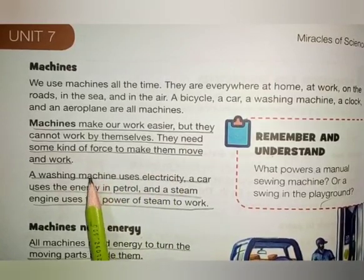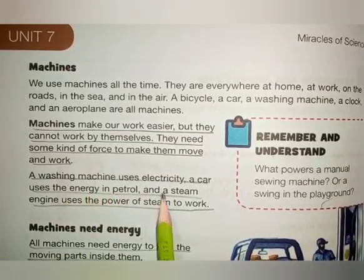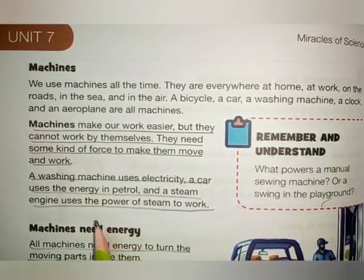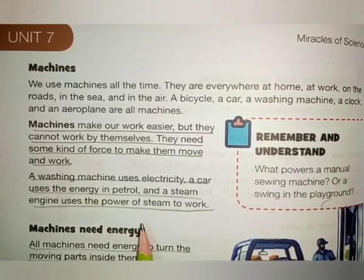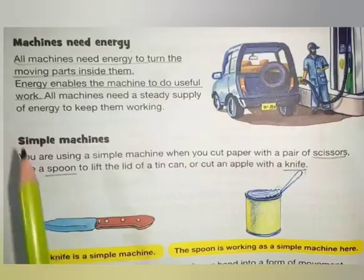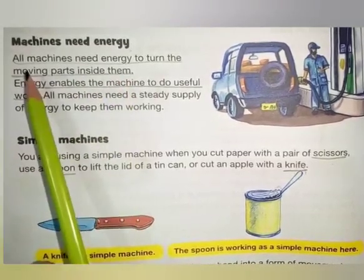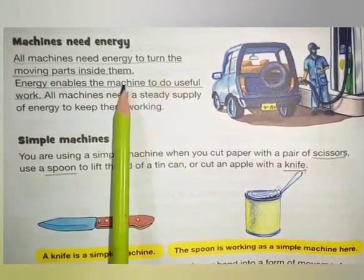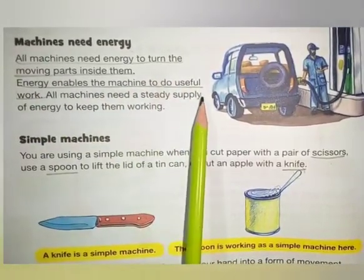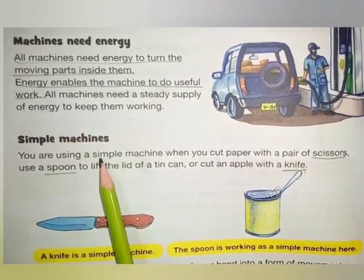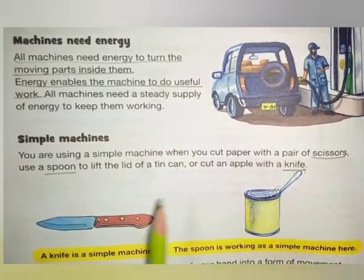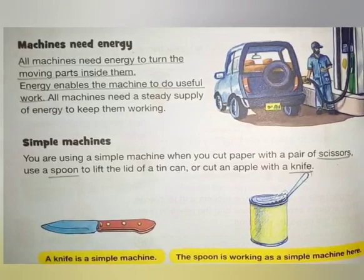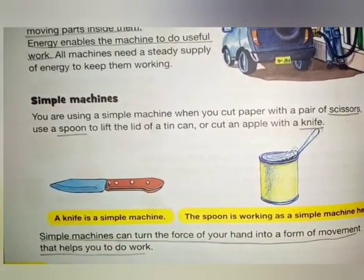For example, a washing machine uses electricity, a car uses the energy in petrol, and a steam engine uses the power of steam to work. Machines need energy — all machines need energy to turn the moving parts inside them. Energy enables the machine to do useful work.